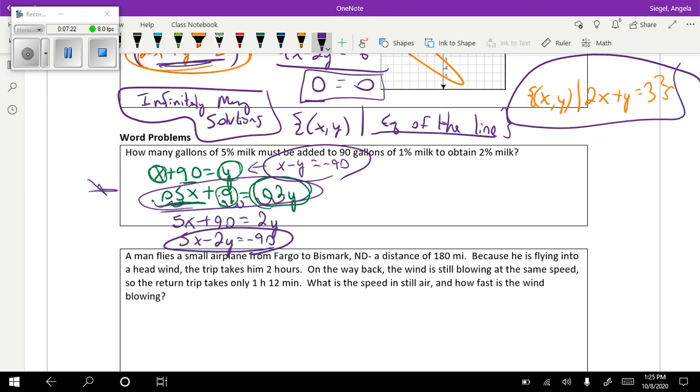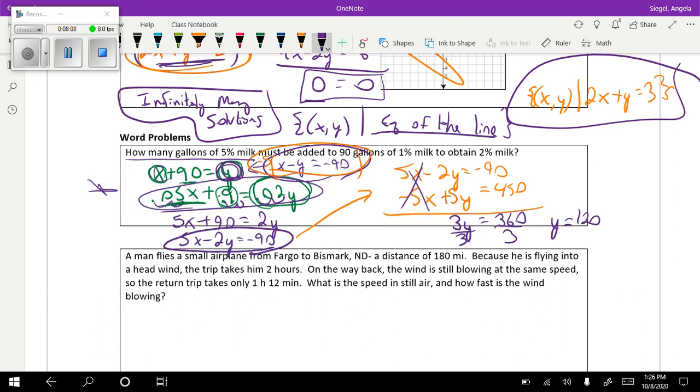Okay, so I have this and I have this. I think what I might do is just multiply everything up here by negative 5. So I'm going to get negative 5x plus 5y equals 450, and this is going to stay 5x minus 2y equals negative 90. So these cancel and I get 3y equals 360, so y equals 120. It says how many gallons of 5% milk, so I found this y, I haven't found this x yet. So x plus 90 equals 120, so x equals 30. So to answer the question, it's going to be 30 gallons of 5%.